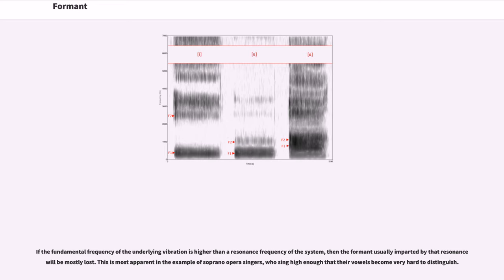If the fundamental frequency of the underlying vibration is higher than a resonance frequency of the system, then the formant usually imparted by that resonance will be mostly lost. This is most apparent in the example of soprano opera singers, who sing high enough that their vowels become very hard to distinguish.